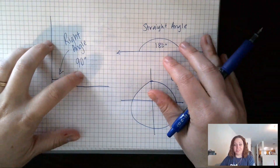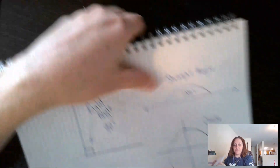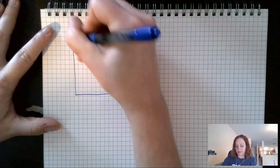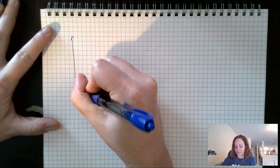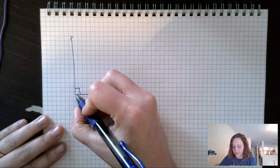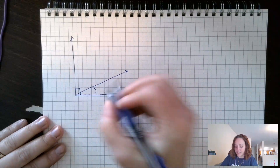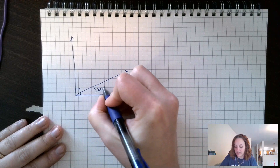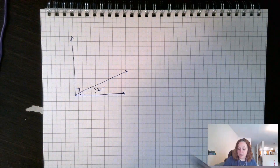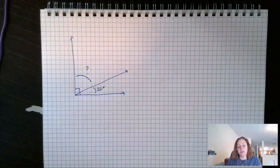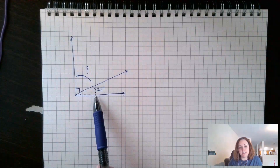We're going to use this information in this lesson. Sometimes we have a picture with an unknown angle — a known part and an unknown part. For example, we have what's labeled as a right angle. We know that this piece is 20 degrees because it's labeled as 20 degrees.